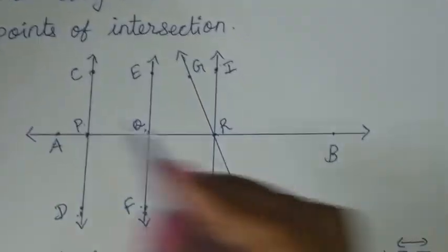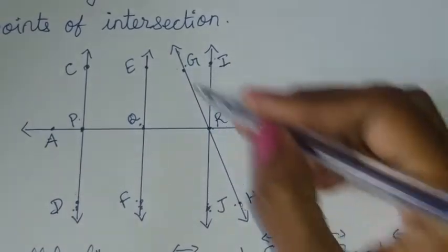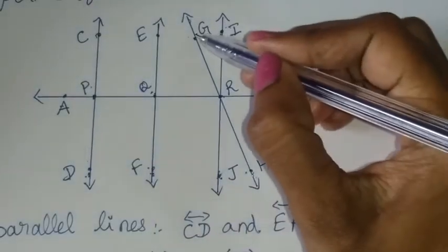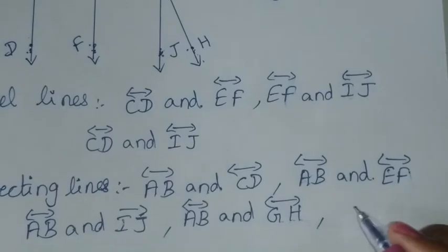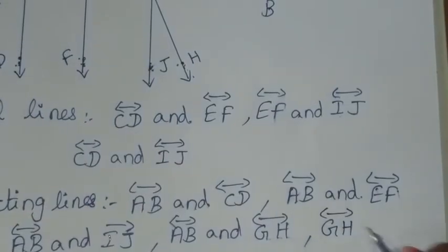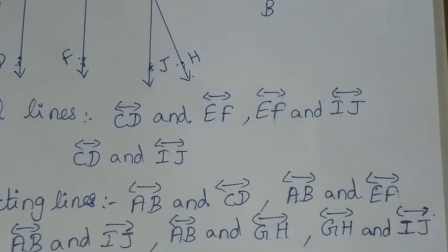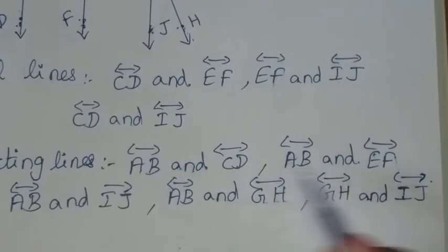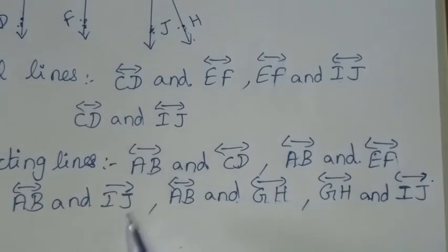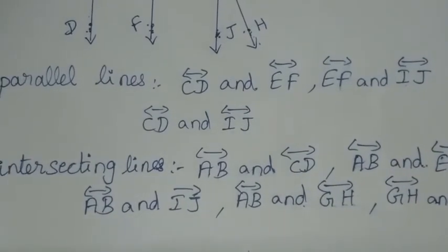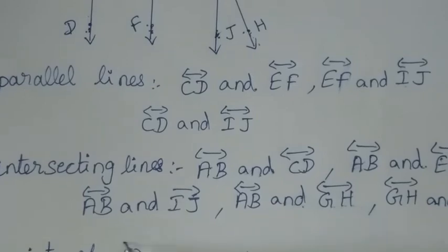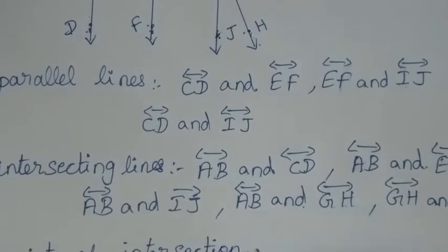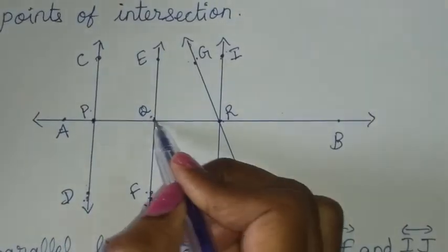AB and IJ intersect in this area. Then GH and IJ intersect in this area. So AB and IJ intersect in this area — 1 point of intersection. 1 point of intersection.